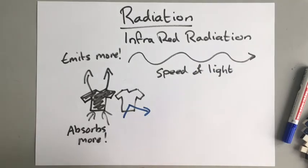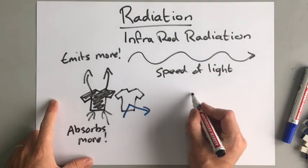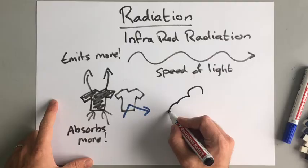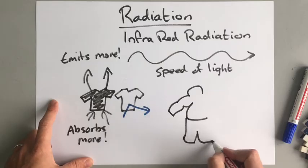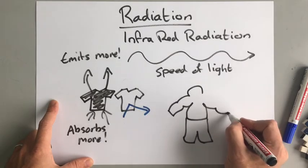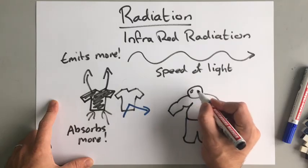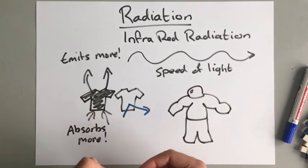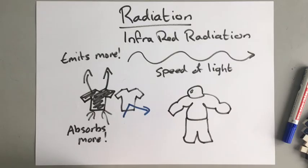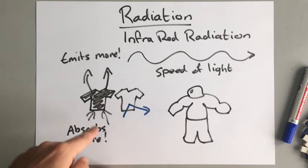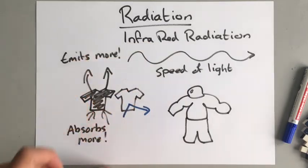A good example is a spacesuit. When astronauts go into space, they wear a big spacesuit, and the spacesuit is white. That's because white gives out as little radiation as possible, so it keeps the heat inside and the astronaut stays warm. If it was painted black, they would lose a lot more heat to space. So black things absorb more infrared radiation and also emit more — that's why the spacesuit is white.